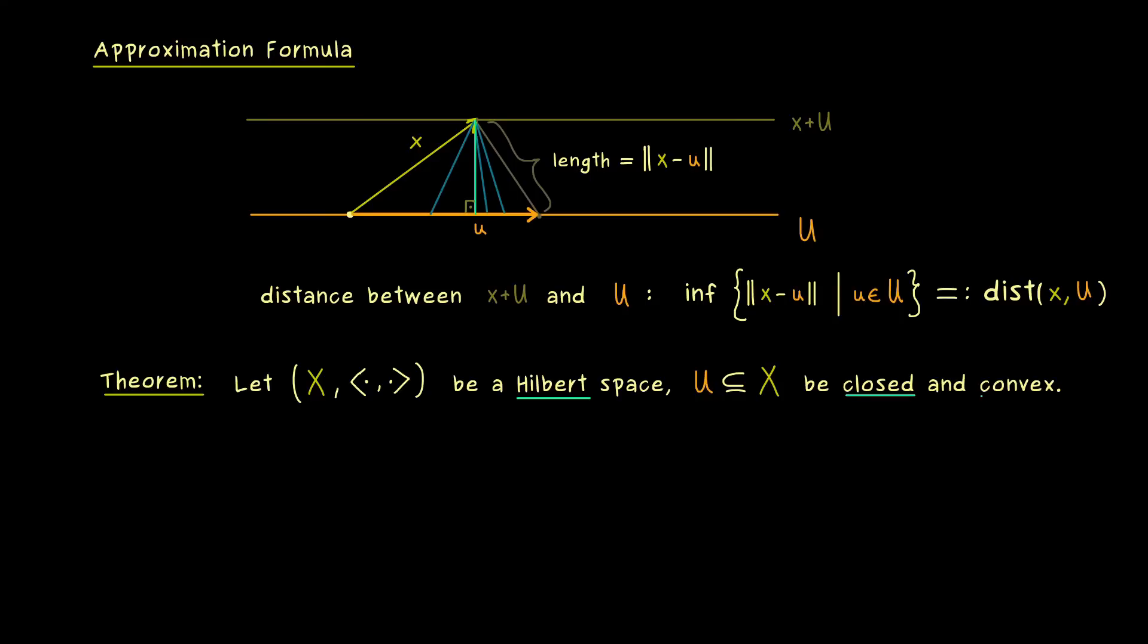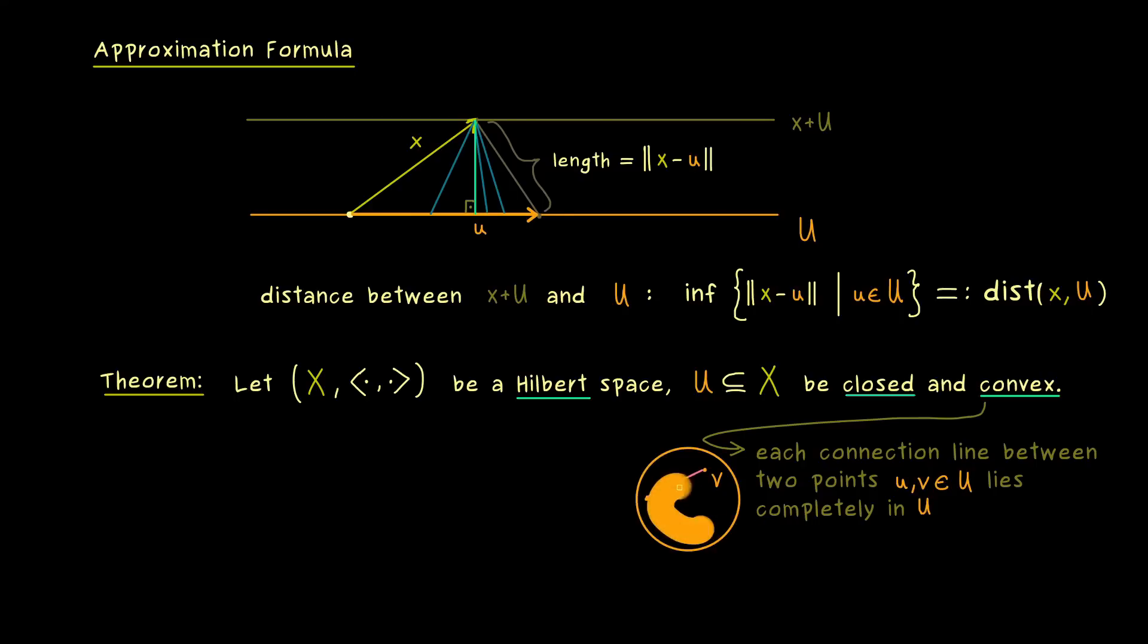Now in the case you have never heard of the term convex, we can quickly define it. It simply means that each connection line between two points in U lies completely in U again. And that's it. This is the definition you should remember for a convex set. The picture is really simple. Just imagine two points u and v. And then the connection line is just given by all the points in between on a straight line. And all these points have to be elements of the set U as well. And this has to work no matter which two points in U you connect.